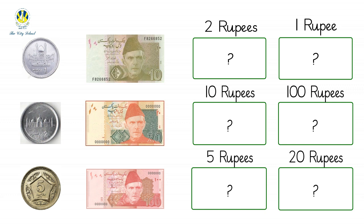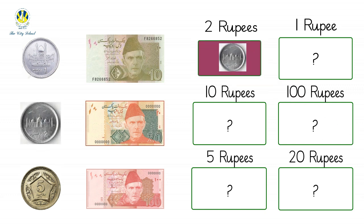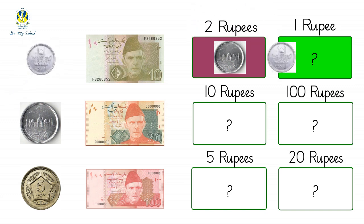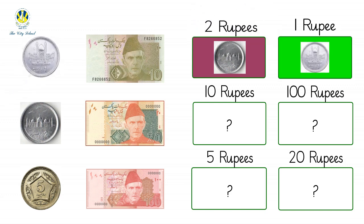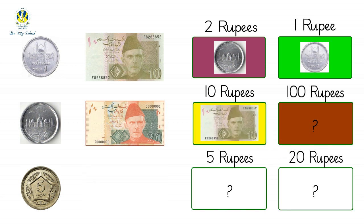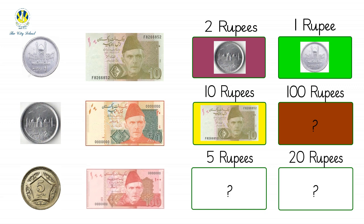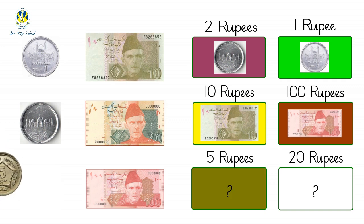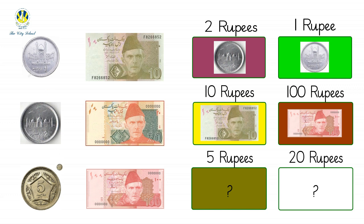Let's find out the two rupees coin. Great — you found it! This is a two rupee coin. Let's look for the one rupee coin. Excellent — this is a one rupee coin. Any guesses for the ten rupees note? Fantastic — this is a ten rupees note. Let's look for a hundred rupees note. Great job — this is a hundred rupees note. I wonder where is the five rupees coin? You guessed it right — this is a five rupees coin.